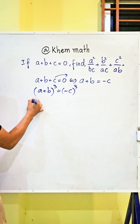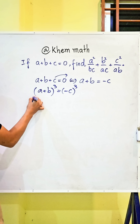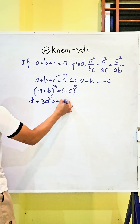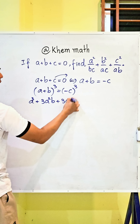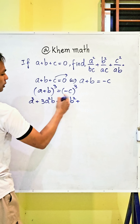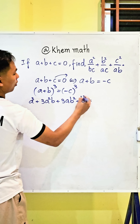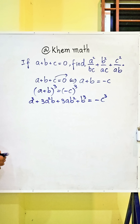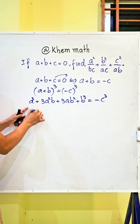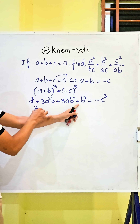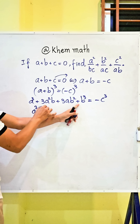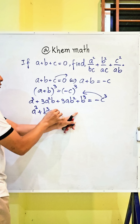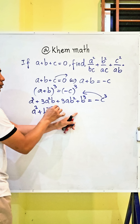We use the binomial formula and get a to the power three, plus three a squared b, plus three ab squared, plus b to the power three equals negative c to the power three. Then we get a power three plus b power three, and we move the c power three term to the left hand side, giving us plus c power three.